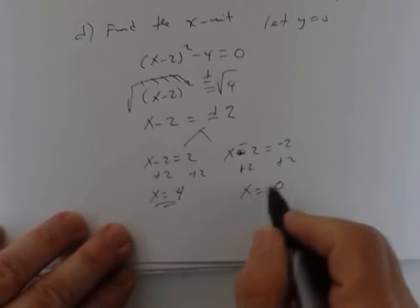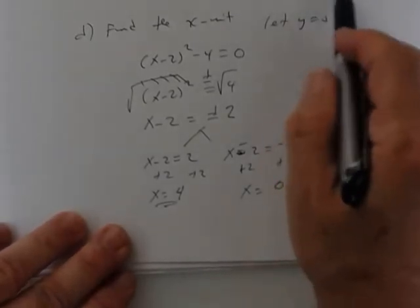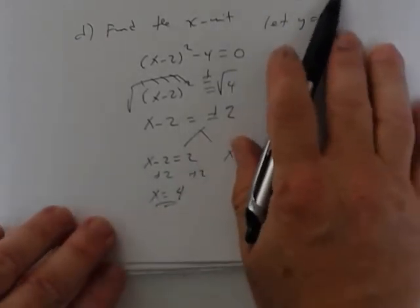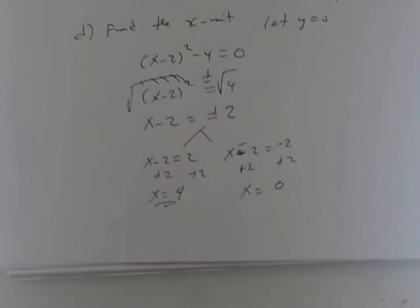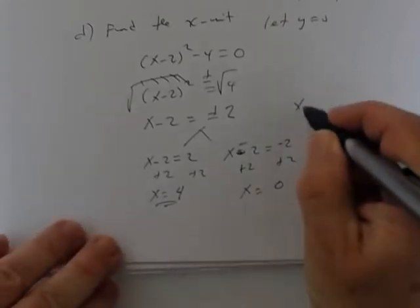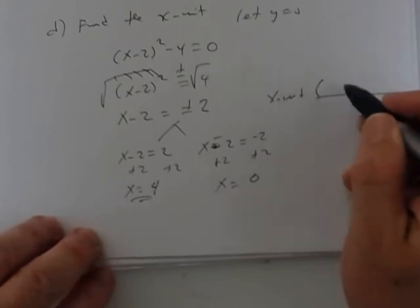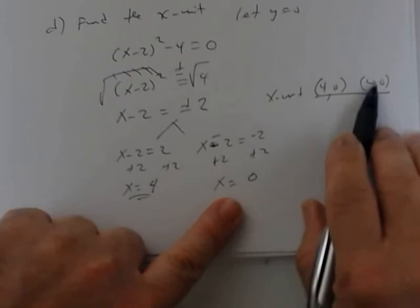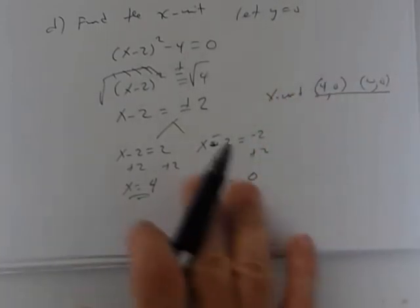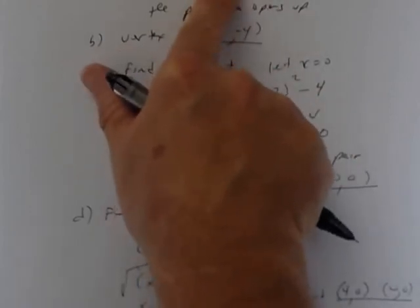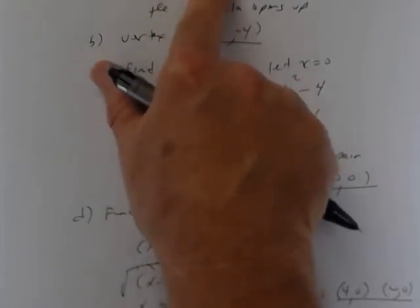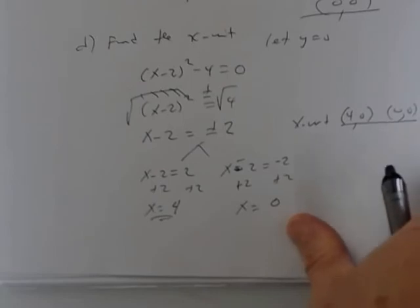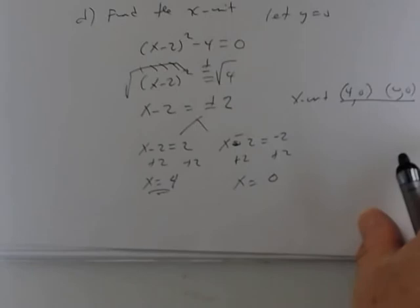Only one person said 'x equals' when naming the axis of symmetry — you have to give the equation of a vertical line. The axis of symmetry is x equals 2. When graphing, draw the axis of symmetry as a dotted line. The vertex is (2, negative 4), the y-intercept is (0, 0), and the x-intercepts are (0, 0) and (4, 0).